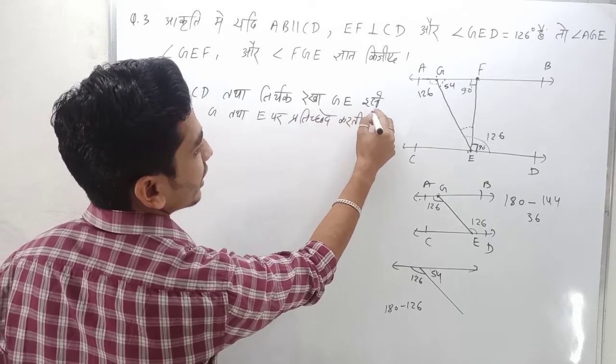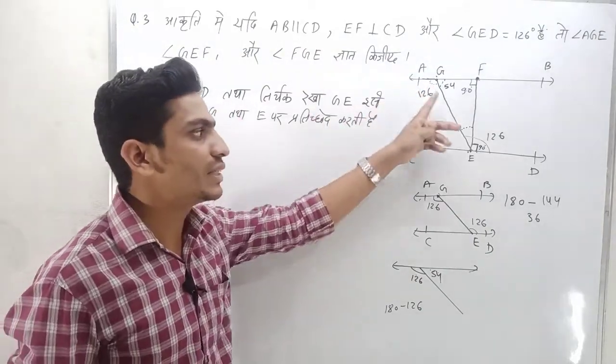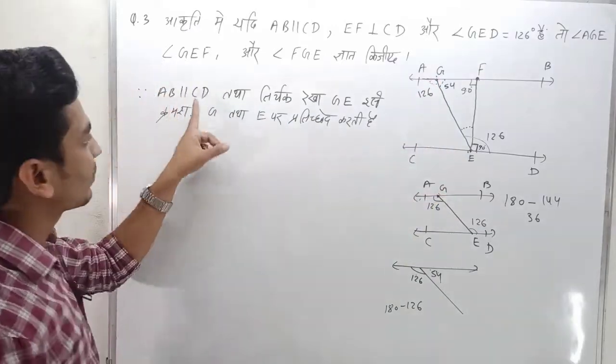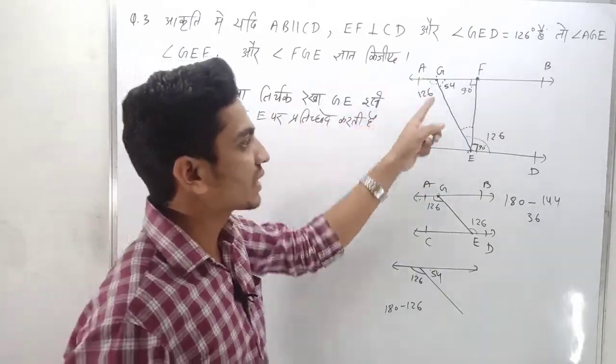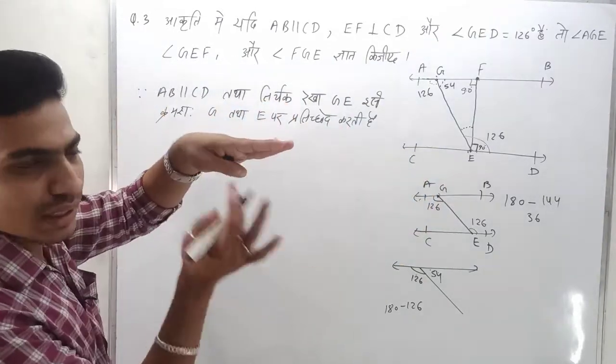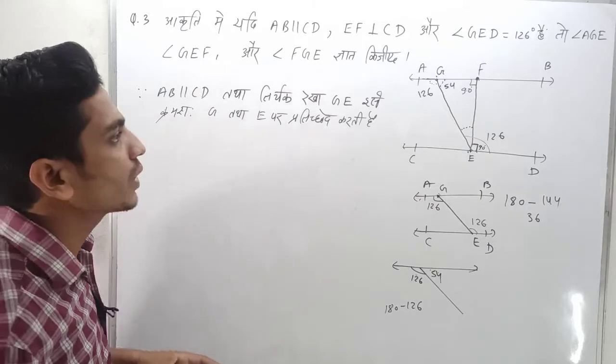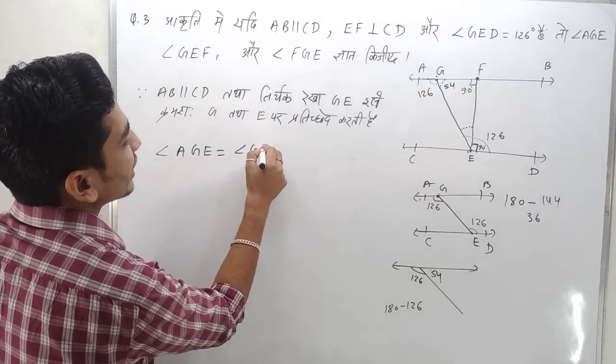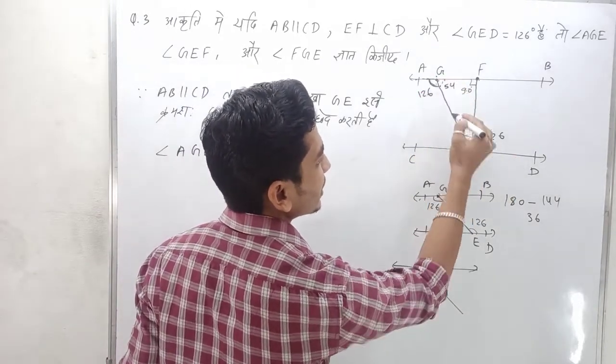Since AB is parallel to CD and transversal GE intersects AB at G and CD at E, when a transversal intersects two parallel lines, alternate angles are formed and they are equal. The alternate angle from AGE is angle Z.